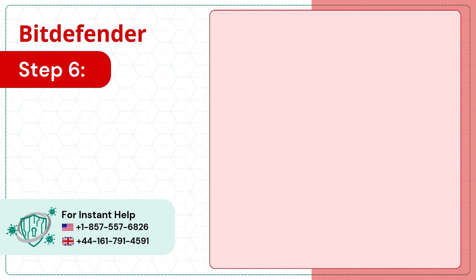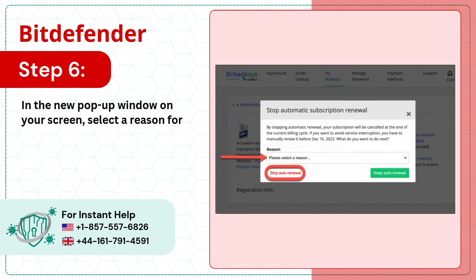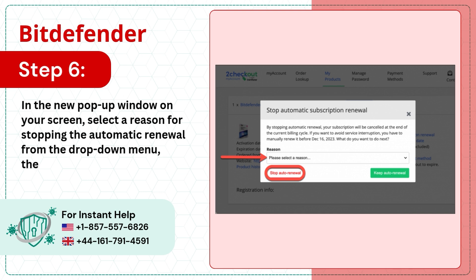Step 6: In the new pop-up window on your screen, select a reason for stopping the automatic renewal from the drop-down menu, then press the Stop Auto Renewal button twice in a row.